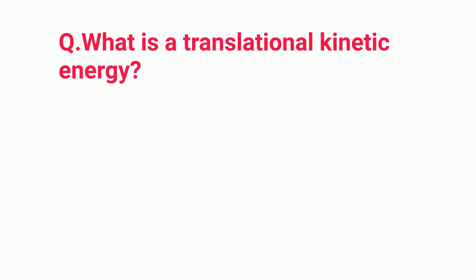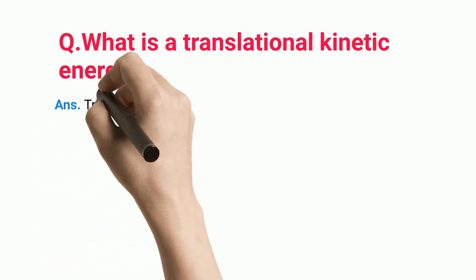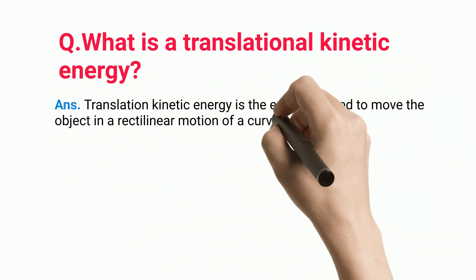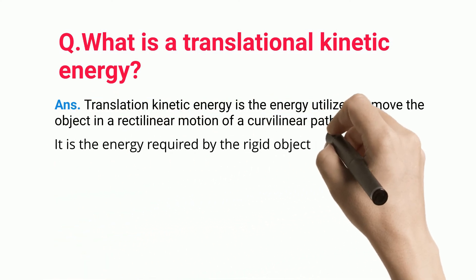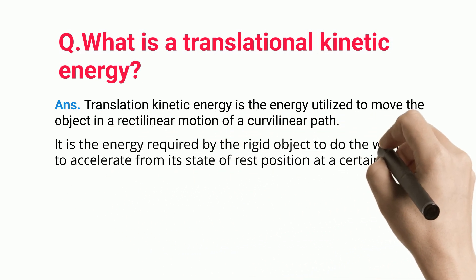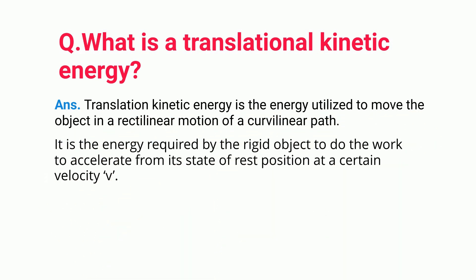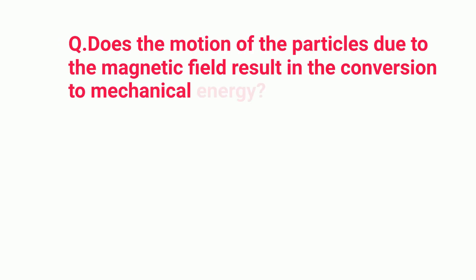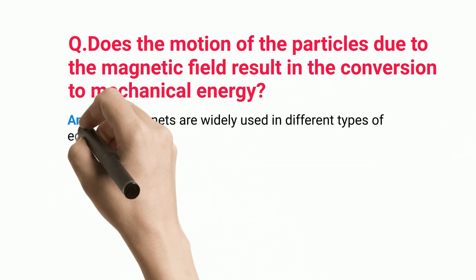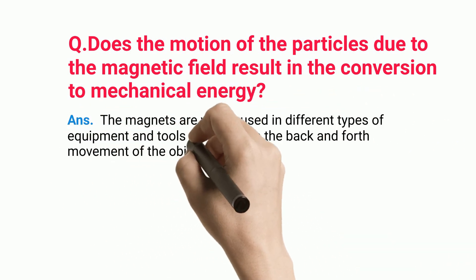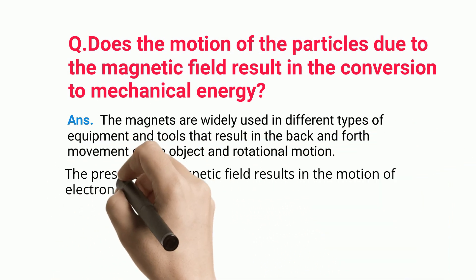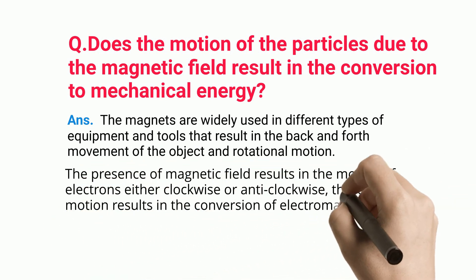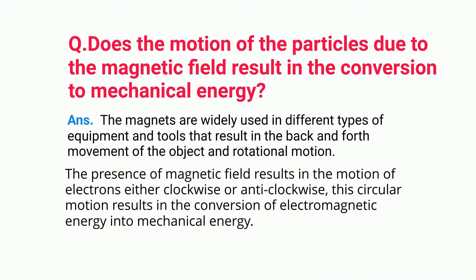Frequently Asked Questions. What is translational kinetic energy? Translational kinetic energy is the energy utilized to move the object in a rectilinear motion or a curvilinear path. It is the energy required by the rigid object to do the work to accelerate from its state of rest position at a certain velocity V. Does the motion of particles due to a magnetic field result in conversion to mechanical energy? The magnets are widely used in different types of equipment and tools that result in the back-and-forth and rotational motion of the object. The presence of a magnetic field results in the motion of electrons either clockwise or anticlockwise; this circular motion results in the conversion of electromagnetic energy into mechanical energy.